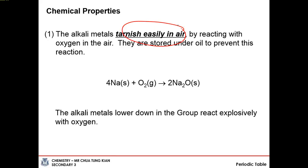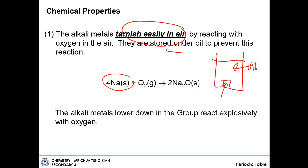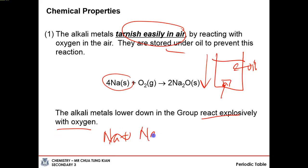The reactivity increases going down the group because the valence electrons are more easily lost, so the chemical reaction proceeds more readily. During the reaction of potassium with water, you observe specific behaviors: the metal melts into a silvery ball, darts around the surface, catches fire, and sometimes explodes, burning with a lilac flame. For sodium, it also melts, darts around, catches fire and burns with a yellow flame. These descriptors are important to remember when answering exam questions.